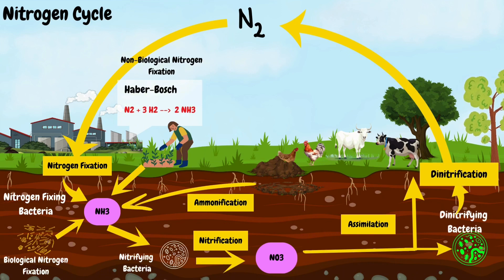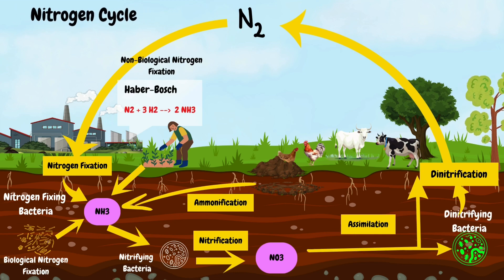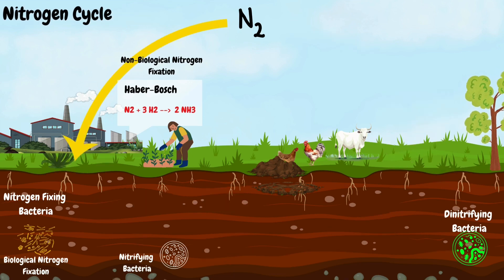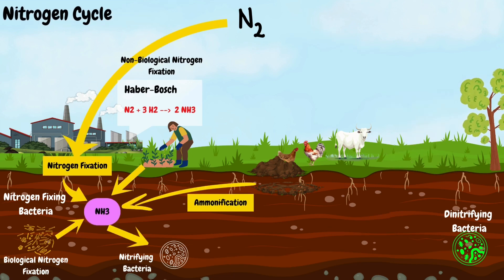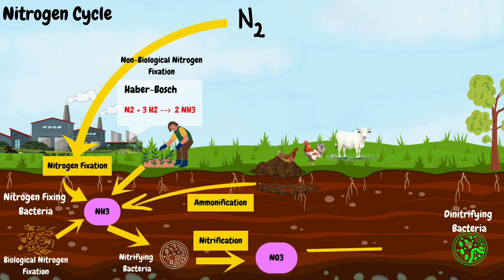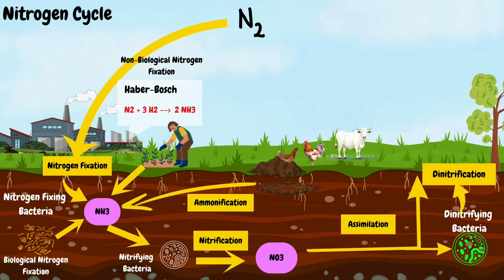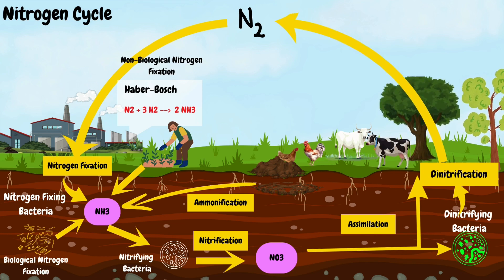And there you have it, the nitrogen cycle in a nutshell. From nitrogen fixation to denitrification, this cycle plays a vital role in maintaining the balance of nitrogen in ecosystems, supporting plant growth and sustaining life on earth.